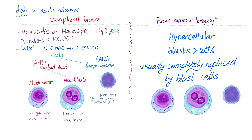Platelet count will be low — thrombocytopenia. Normal platelet count is 150,000 to 400,000; less than 100,000 is thrombocytopenia. White blood cell count can be less than 10,000 or over 100,000, and the cells are blasts — either lymphoblasts or myeloid blasts. Myeloid blasts are subdivided into myeloblasts and monoblasts.